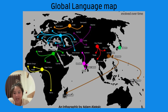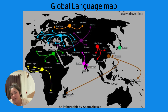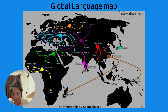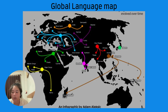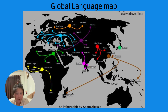So if you speak any of these languages, congratulations — you're part of the linguistic chaos club. The Indo-European languages started around 4,500 to 6,000 years ago, probably somewhere around the steppes of modern-day Ukraine or Kazakhstan. Thank ancient nomads for spreading their language as they moved around looking for better grass for their sheep.